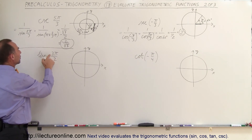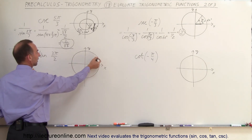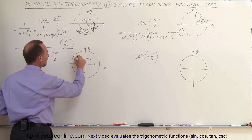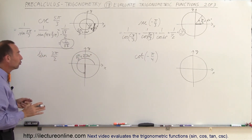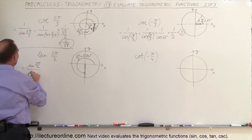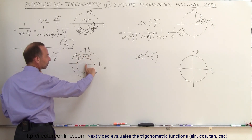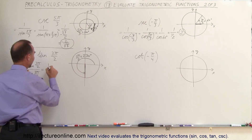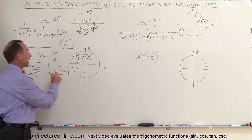Our third example asks for the tangent of 3π over 2. That gets us all the way around to 270 degrees on the unit circle. We convert the tangent to sine over cosine: the sine of 3π over 2 divided by the cosine of 3π over 2. The sine at 270 degrees is equal to negative 1 — the radius of the unit circle — and the cosine is equal to 0. So negative 1 divided by 0 is undefined, and therefore that is our answer.